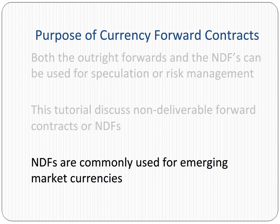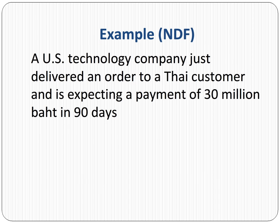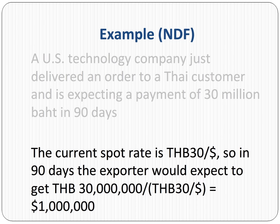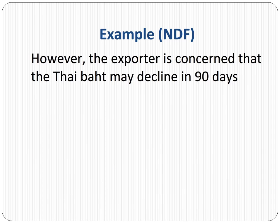The emerging market currencies lack liquidity, so settling them in commonly used currencies provides a convenient way to hedge or speculate against them. Let's consider a US technology company that just delivered an order to a Thai customer and is expecting a payment of 30 million baht in 90 days. Assume the current spot rate is 30 baht per dollar, so the exporter has an account receivable of 1 million US dollars.